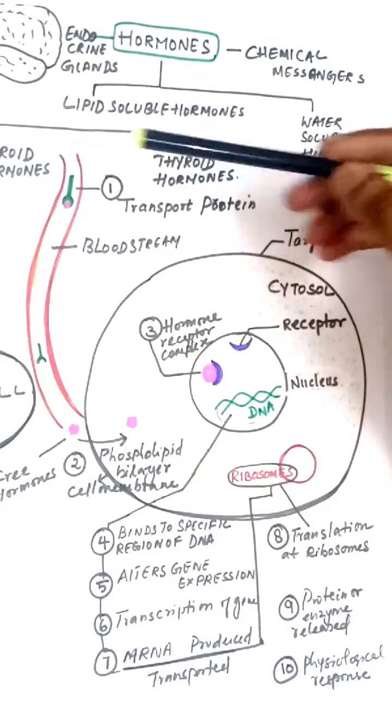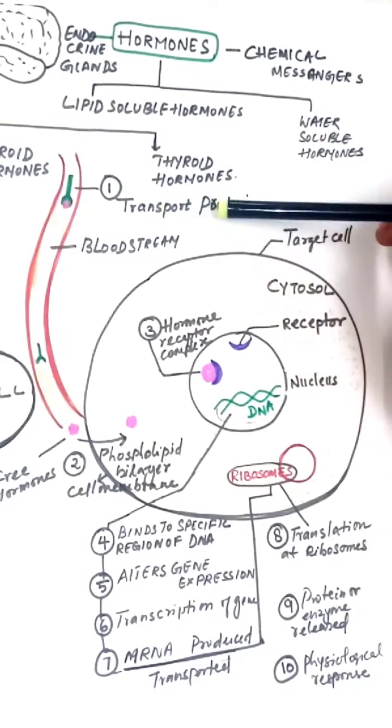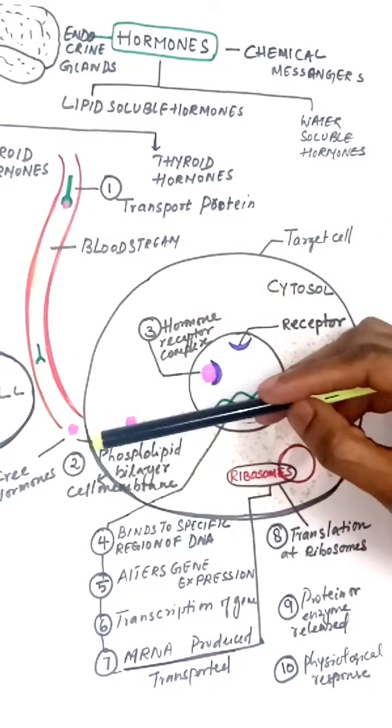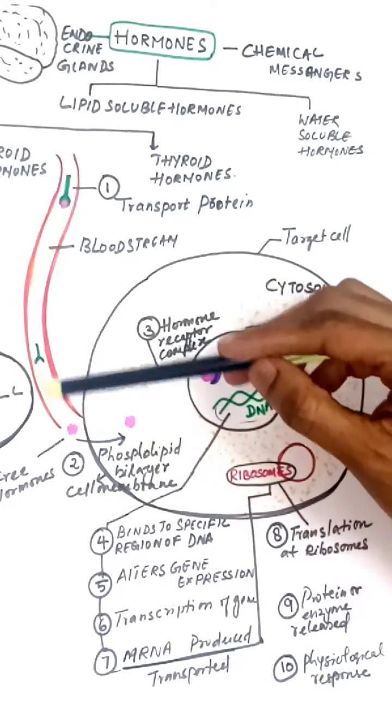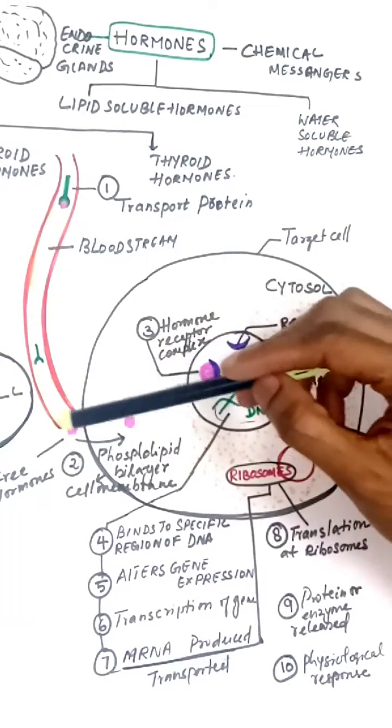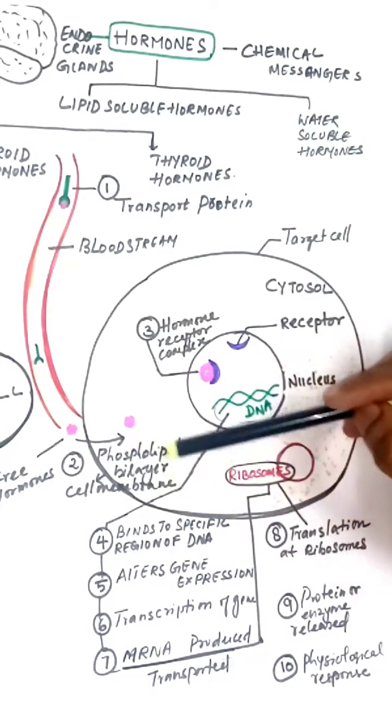Hormones are released from the endocrine glands. The first step is it is transported with the help of protein in the bloodstream. The second step: when it reaches the target cell with the receptor, it gets released from the transport protein and the free hormone crosses the phospholipid bilayer of the cell membrane.